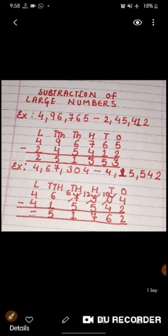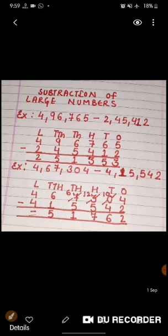On 10,000 place, 6 minus 1 gives 5, and on the lakh place, 4 and 4 are there, so minuend and the subtrahend are the same. So here, there will be 0. So the answer of our second example is 51,762.